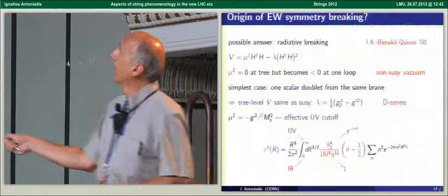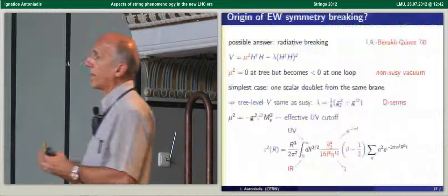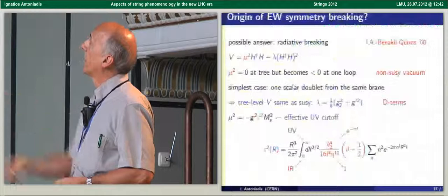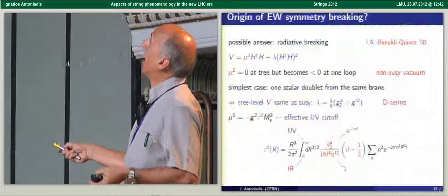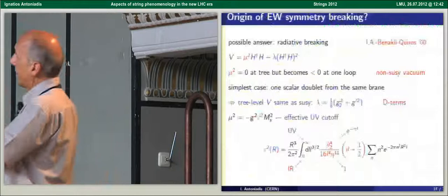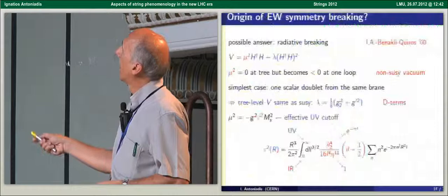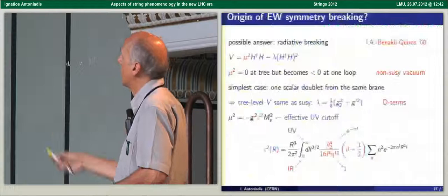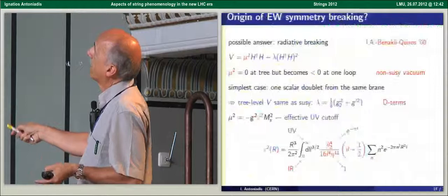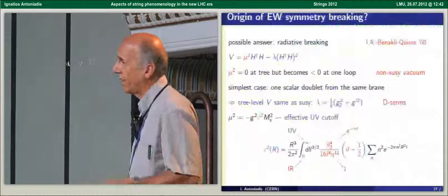So suppose that, then let me elaborate a bit on this question on the fine-tuning. Suppose that the Higgs arises massless at the tree level either in a supersymmetric intersection or by truncation of some N=4 of some supersymmetric sector. If it arises from a truncation of the supersymmetric sector then the tree level coupling will be related by the gauge coupling g^2, so in some sense it's like the high scale supersymmetry is a boundary condition for the Higgs quartic coupling.